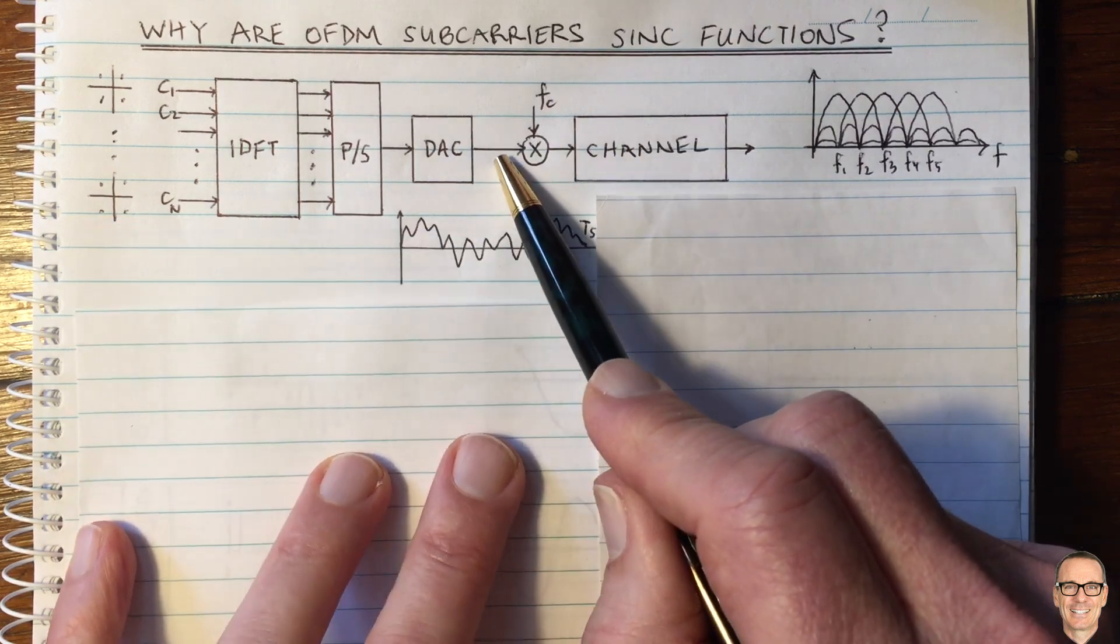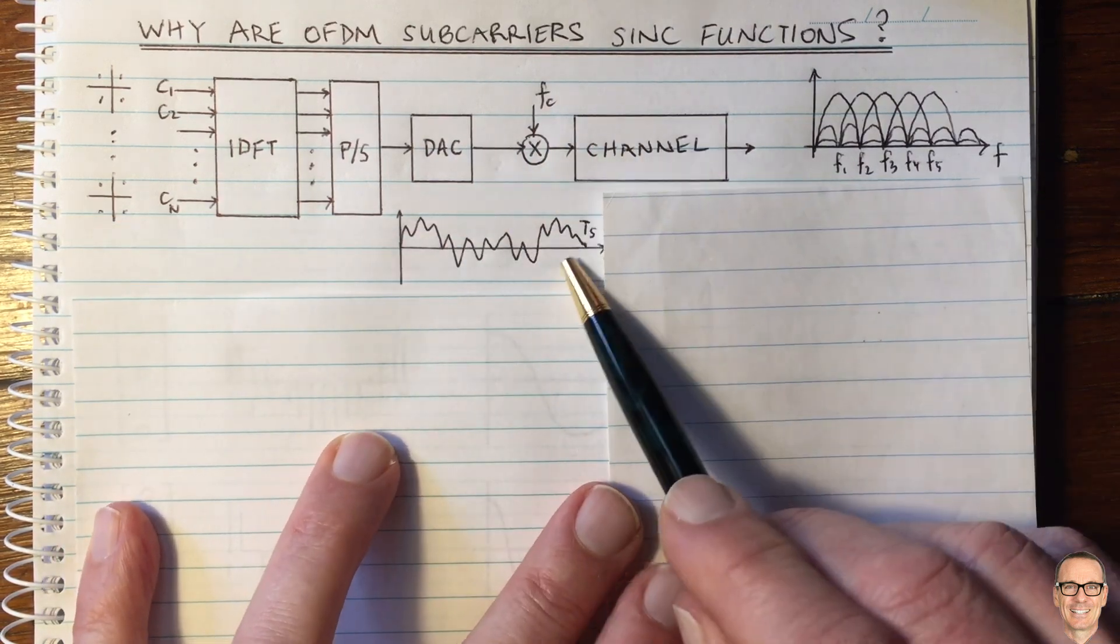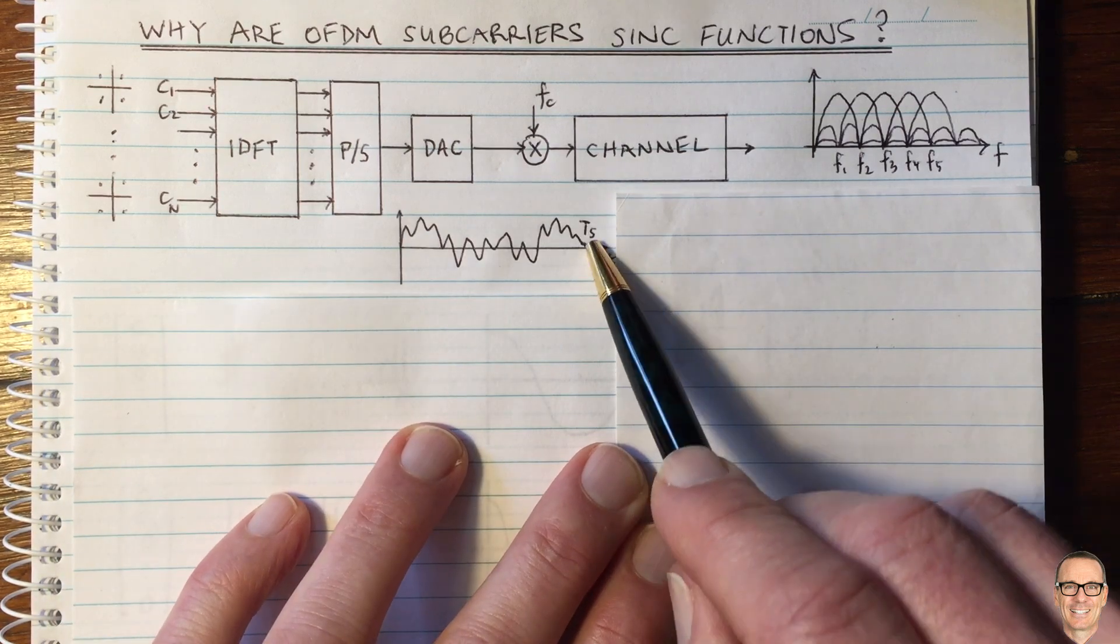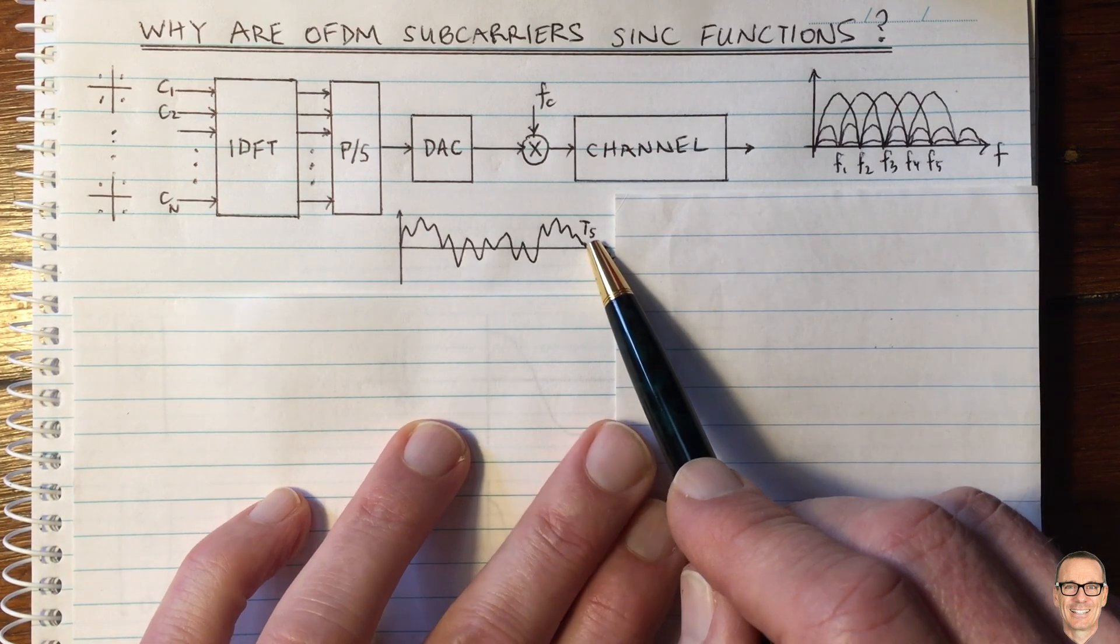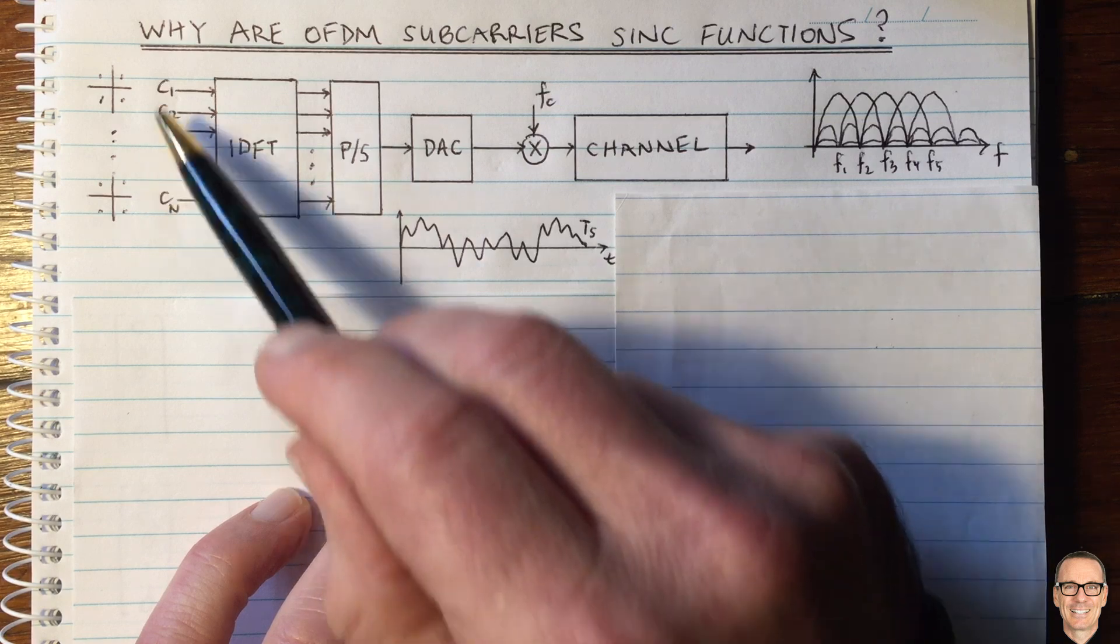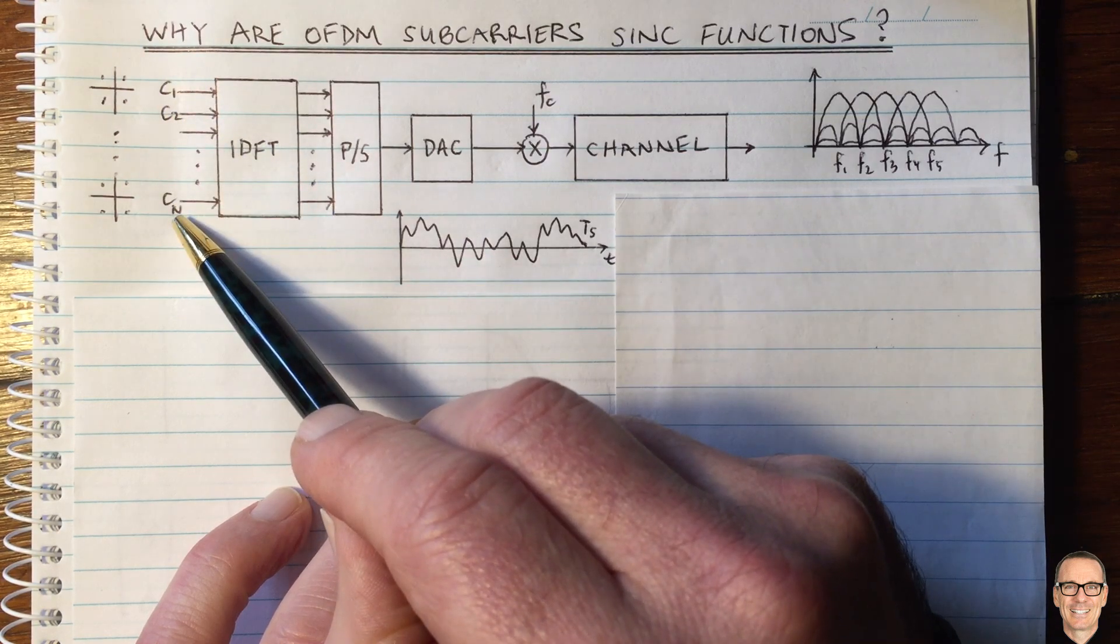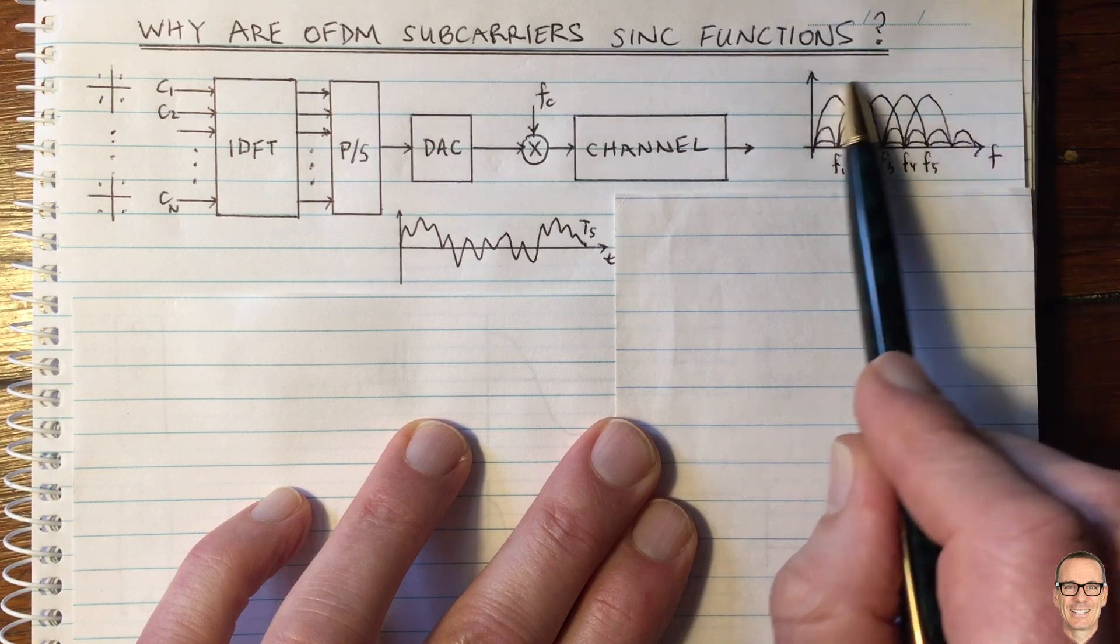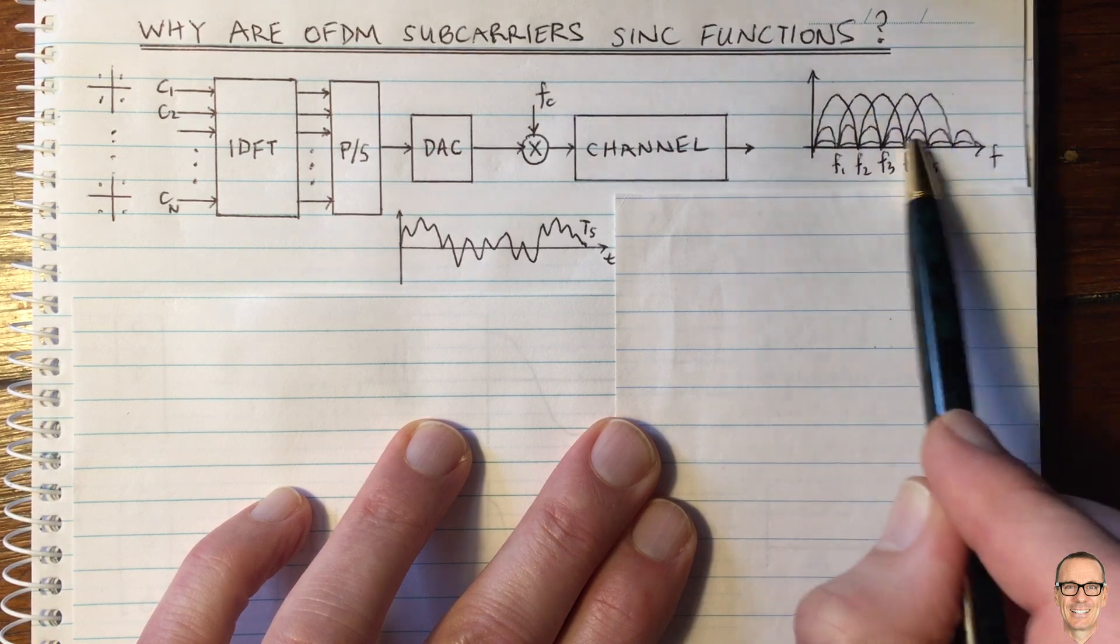So let's think about this waveform here. I've just drawn one example of it here, and it's of length TS, the symbol time. So we're going to be sending this sequence of constellation points over the time TS, and it has a frequency domain representation like this.